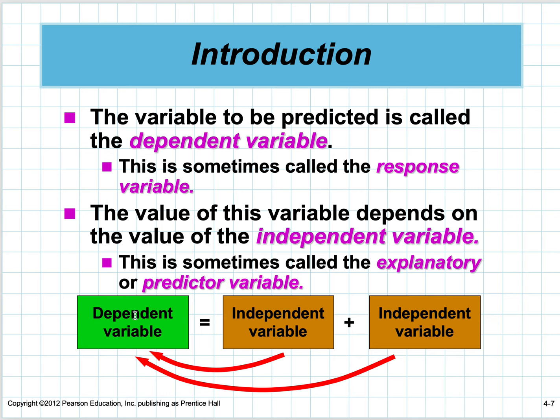In multiple regression, we may have two independent variables and try to predict a dependent variable. We tend to label the independent variables x, x1, x2, and we label the dependent variable y. We're trying to predict y using some independent variables.